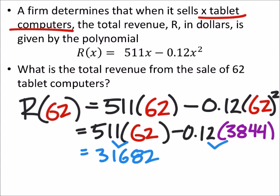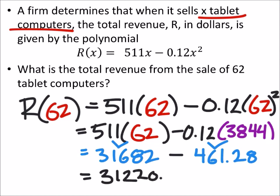There we go, 461.28. And I'll get this one right, hopefully. We're subtracting these, so minus 31,632, and I get this is 31,220.72.